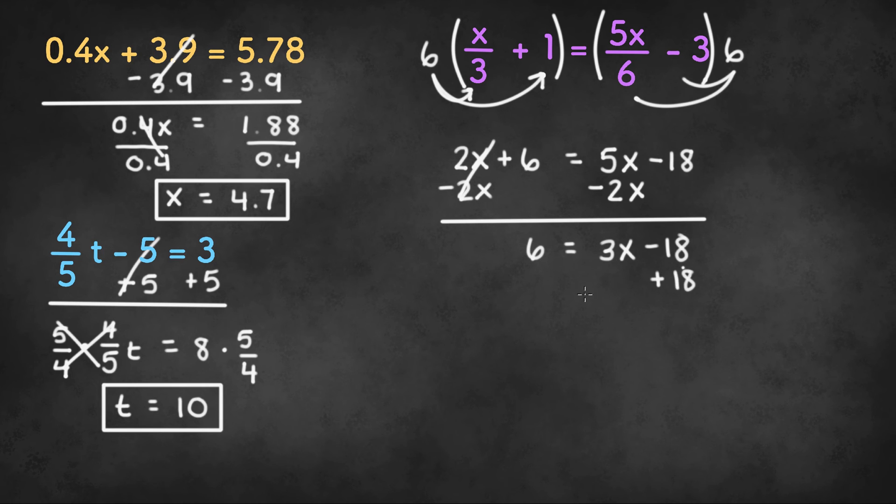We can add 18 to both sides to get 6 plus 18 or 24 on the first side and 3x on the second side. We can divide by 3 to get 8 equals x. And that's our final product.